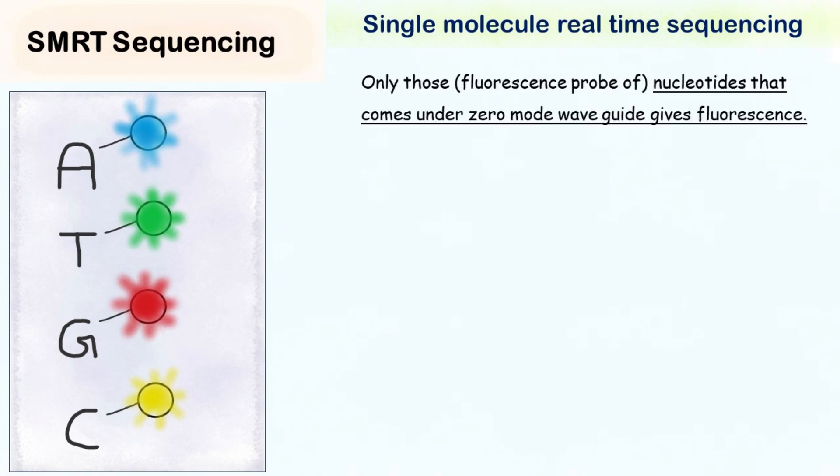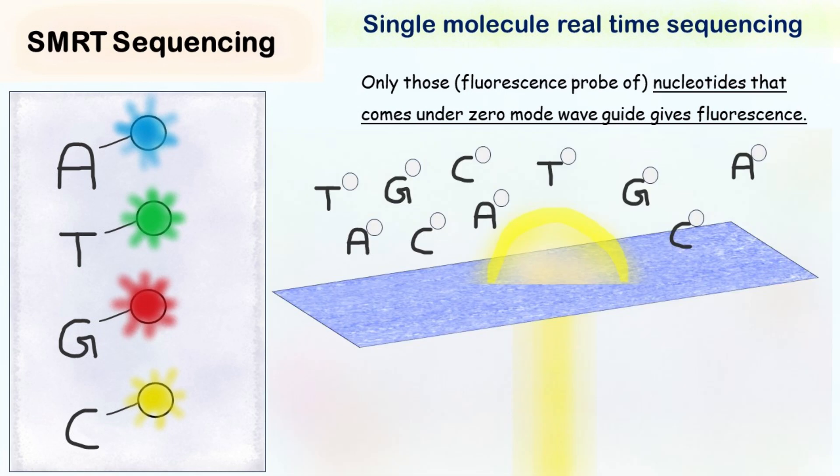Now, here comes the important part. Only those nucleotides that come inside the zero-mode waveguide gives fluorescence. This is because it is only this region that has ability to excite the fluorescent molecule.